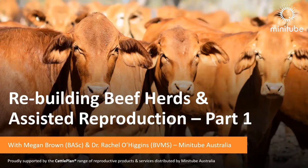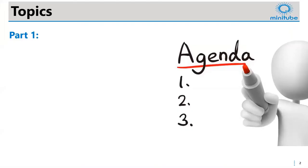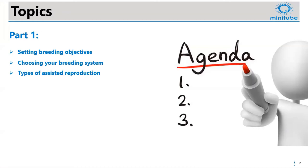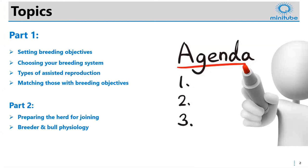Today we are going over some of the management topics around herd rebuilding. To kick things off, we'll go through the agenda. Firstly, we want to have a look at setting breeding objectives and how to do that. Then choosing what sort of breeding system may suit your objectives. We'll look at the different types of assisted reproduction available and how to match those with your particular breeding objectives.